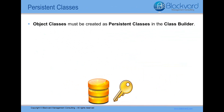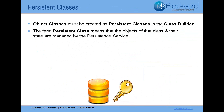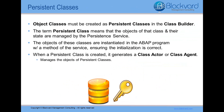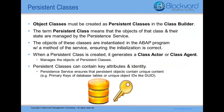Now, to use the persistent service for objects, the classes of these objects must be created as persistent classes in the class builder. Just to clarify, the term persistent class does not imply that a class is persistent. Rather, it means that the objects of that class, as well as their state, are managed by the persistent service. For example, the objects of these classes are instantiated in the ABAP program with a method of the persistent service, which ensures that the initialization is correct and is not being done with the usual create object statements. When the class builder creates a persistent class, it automatically generates an associated class known as the class actor or class agent, whose methods manage the objects of persistent classes. Persistent classes can also contain key attributes, which allow the persistent service to ensure that the content of each persistent object is unique.